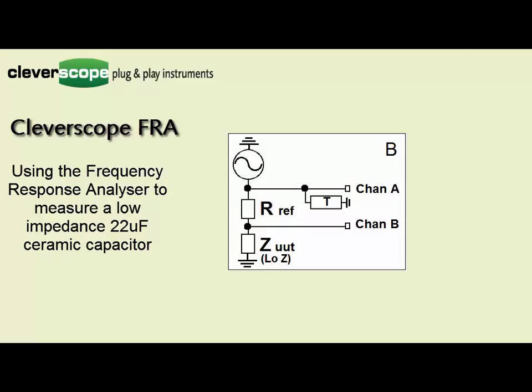We have two channels, channel A measuring the signal generator output and channel B measuring the voltages across the unit under test. We can derive the voltage across RF by channel A minus channel B.